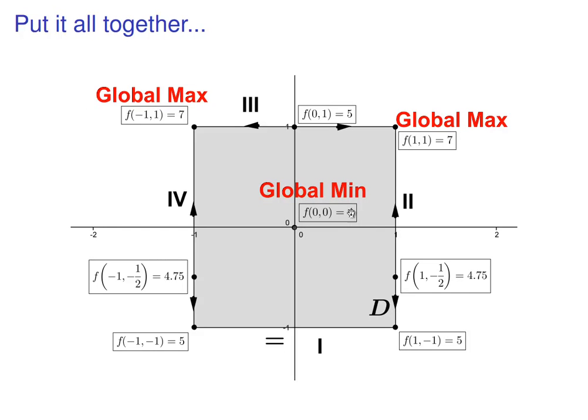So in the end, we get that our min occurs at 0, 0, and the value is 4. And our max, well, there's two of them. They occur at negative 1, 1 and 1, 1, and the max value is 7. I hope this helps. Please let me know if you have any questions.